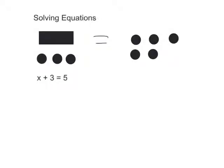We are going to look at solving equations from a perspective of algebra tiles. In this example, the rectangles represent x and the circles represent the constants. Here we have a picture of x and 3 constants on the left equals 5 constants on the right.